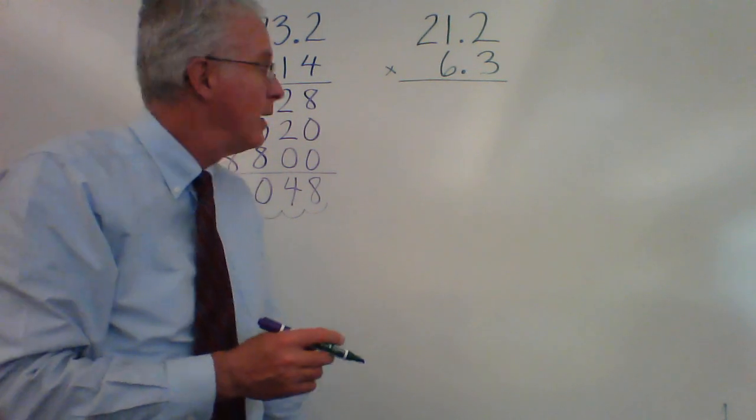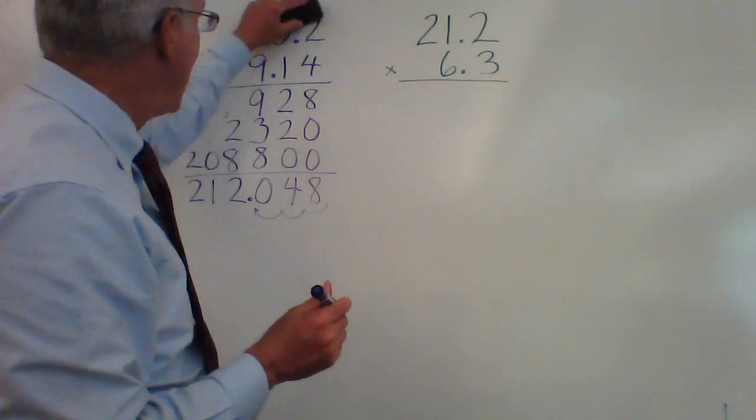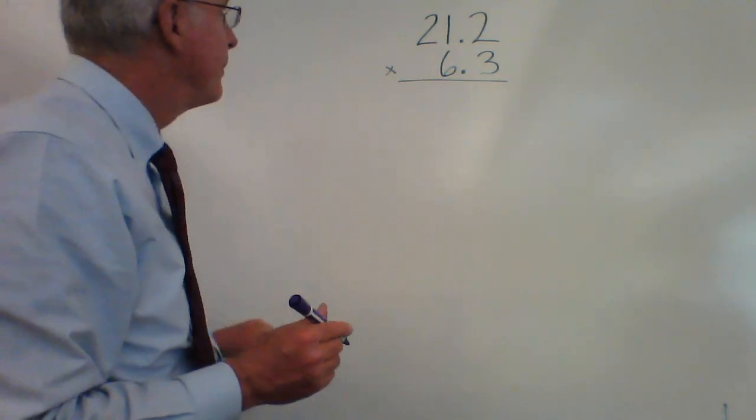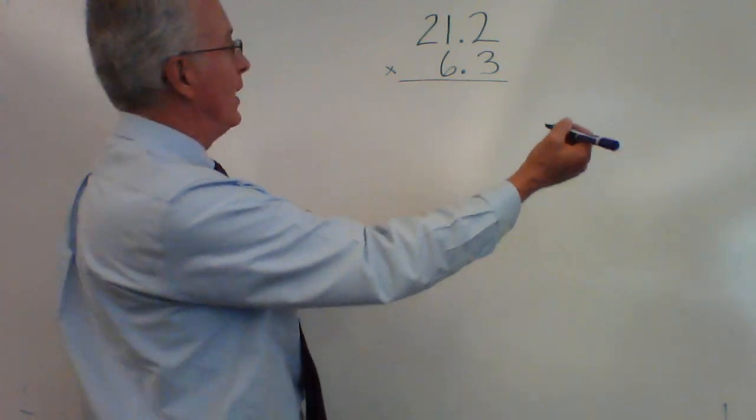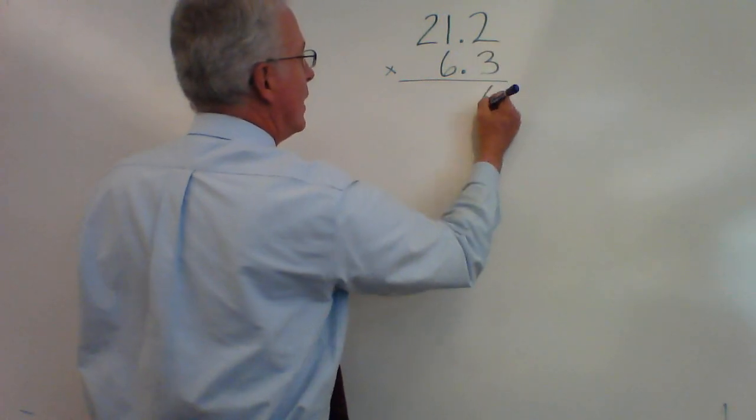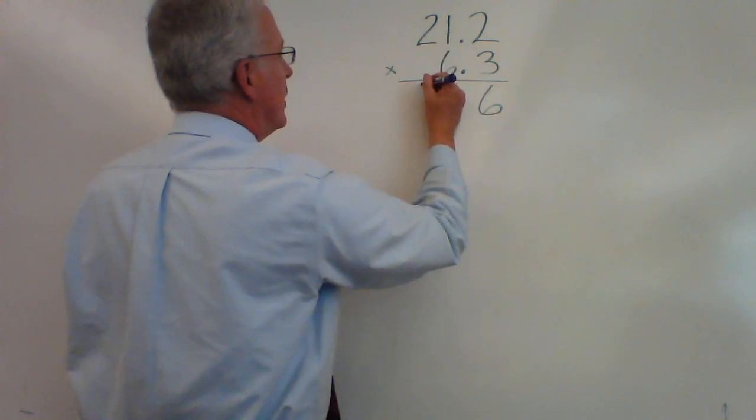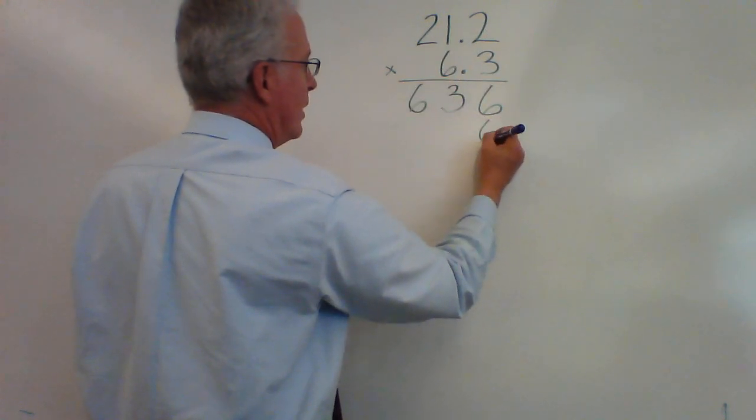All right, here we are back in action. Let's get this out of our way. Hey, same thing. 3 times 2 is 6. 3 times 1 is 3. 3 times 2 is 6, 0.